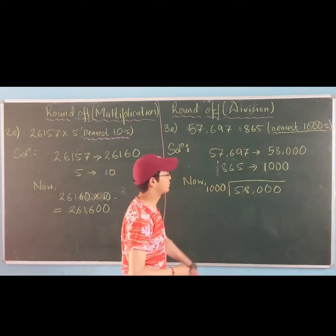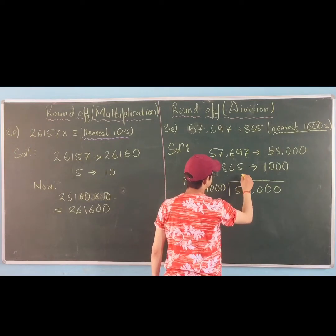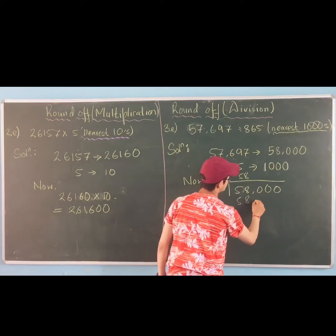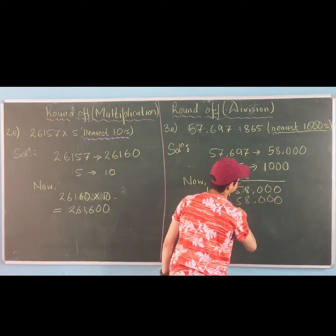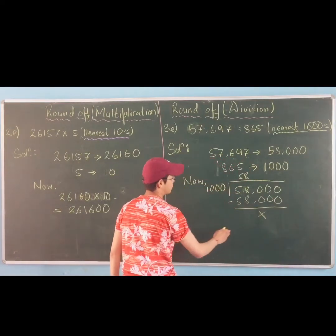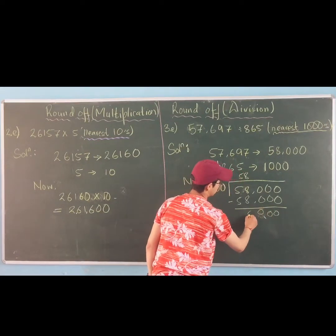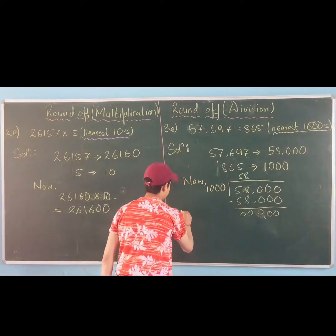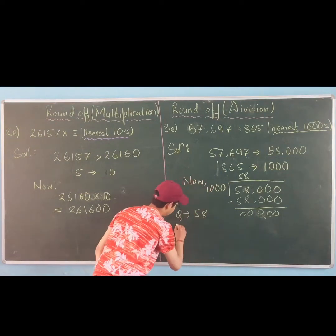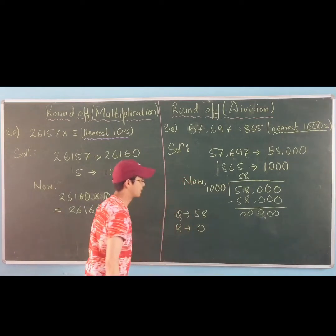When you divide this by 1000, 1000 into 58 is 58000. You subtract, and the remainder is 0. So the answer is 58, with remainder 0.